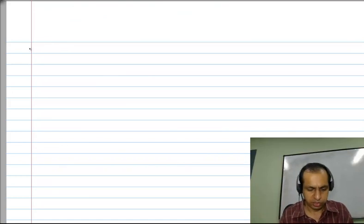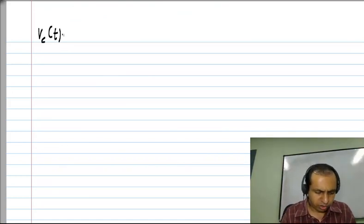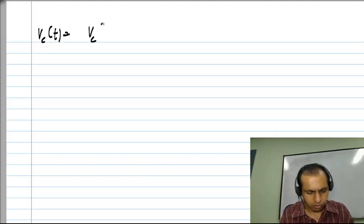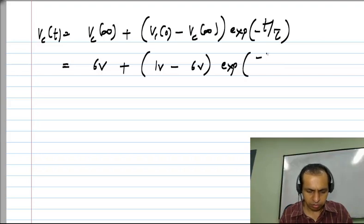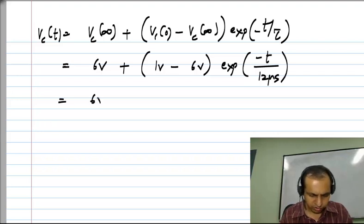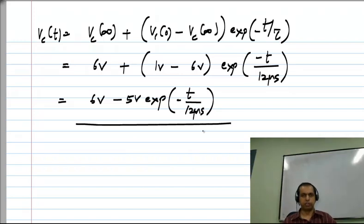So we can easily write out the expression. We know that VC of T is VC of infinity plus VC of 0 minus VC of infinity exponential minus T by tau, which is 6 volts minus 5 volts exponential minus T by 12 microseconds. So that is the expression for it.